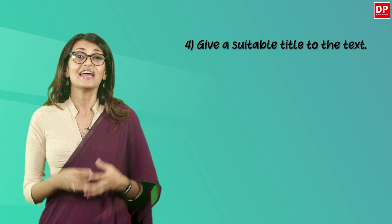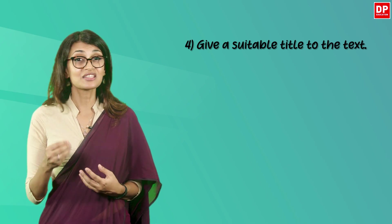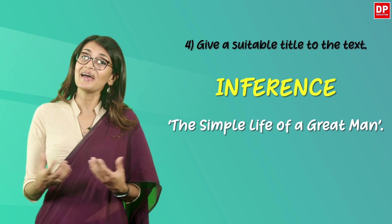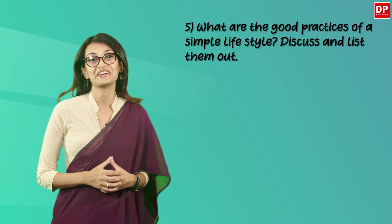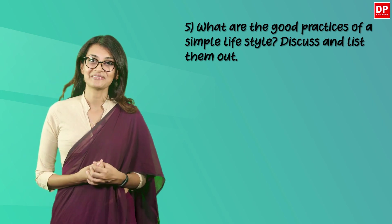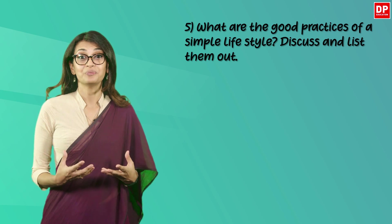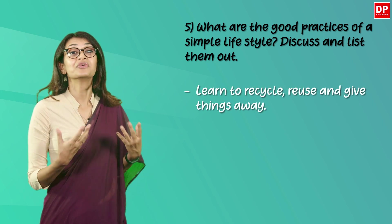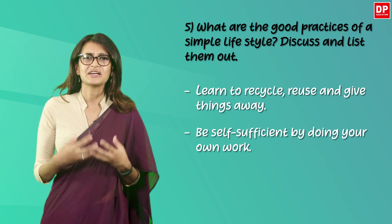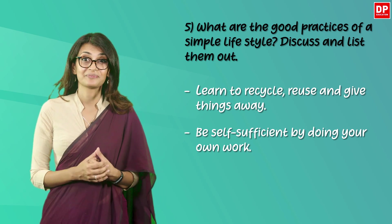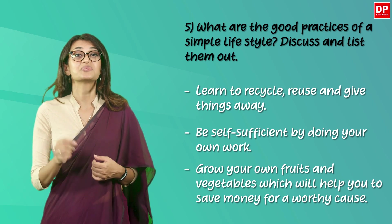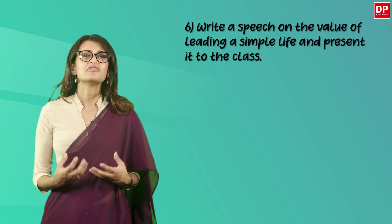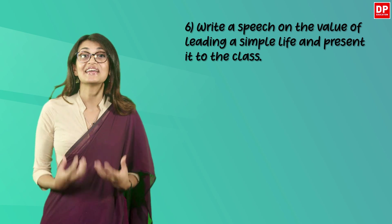The fourth question expects you to give a suitable title — this question requires your inference. How about 'The Simple Life of a Great Man'? Question five: what are the good practices of a simple lifestyle? Discuss and list them out. For this factual question: learn to recycle, reuse, and give things away; be self-sufficient by doing your own work; grow your own fruits and vegetables, which will help you save money for a worthy cause. The final question: write a speech on the value of leading a simple life and present it to the class.